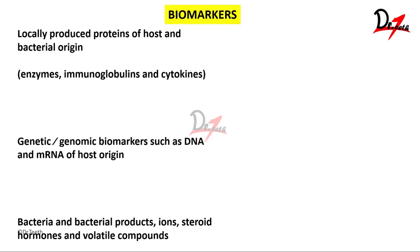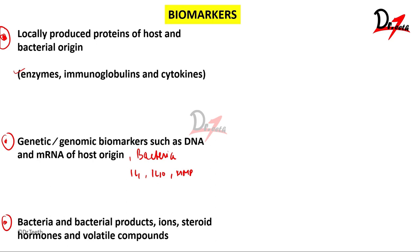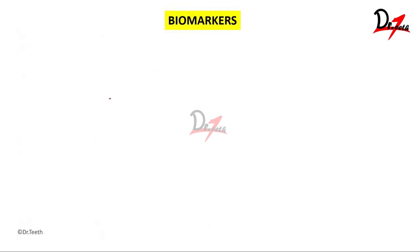Biomarkers can be classified as locally produced proteins or those originating from bacteria — examples include enzymes, immunoglobulins, and cytokines. They can also be genetic or genomic biomarkers such as DNA and mRNA of host or bacterial origin. Examples of genomic biomarkers include cytokines like interleukin-1, interleukin-10, and MMPs. Biomarkers can also be bacteria, bacterial products, ions, steroid hormones, or volatile sulfur compounds.